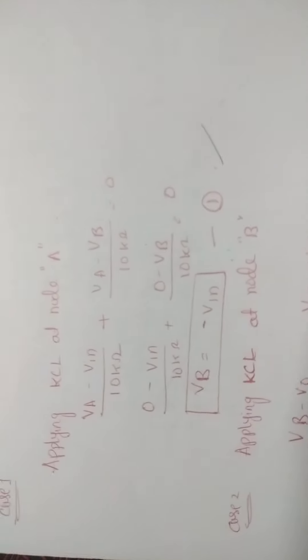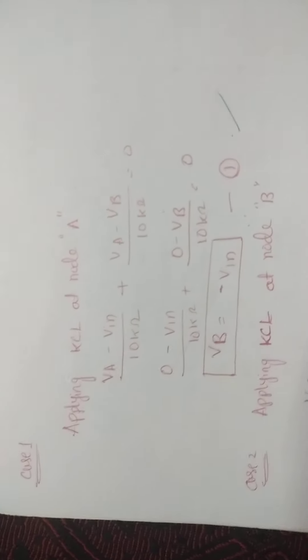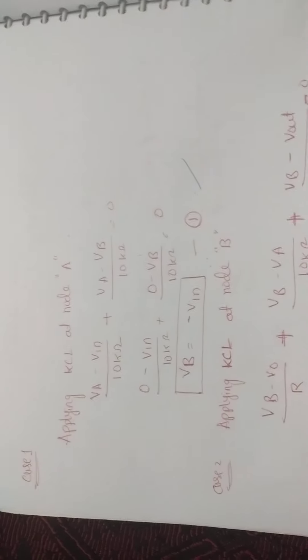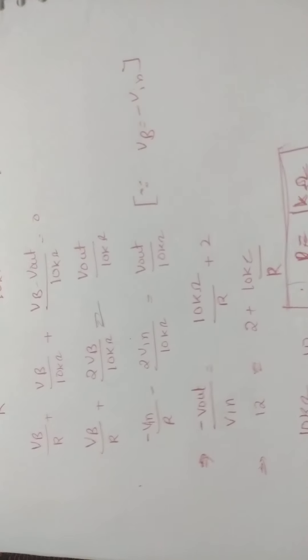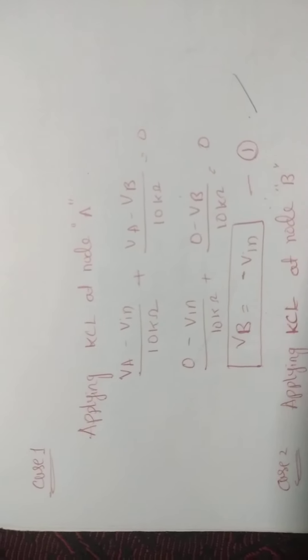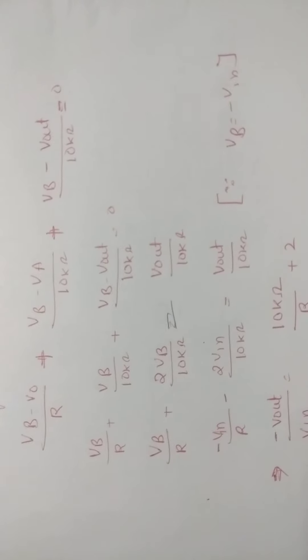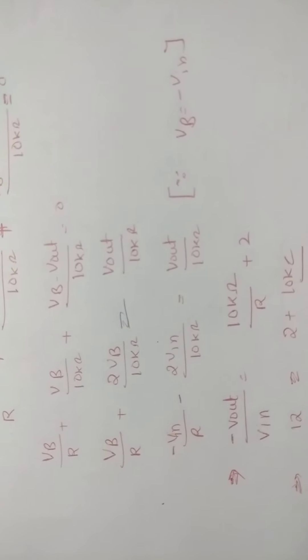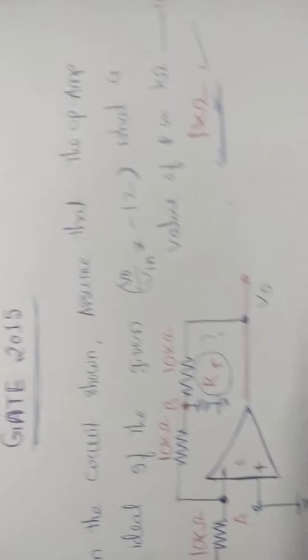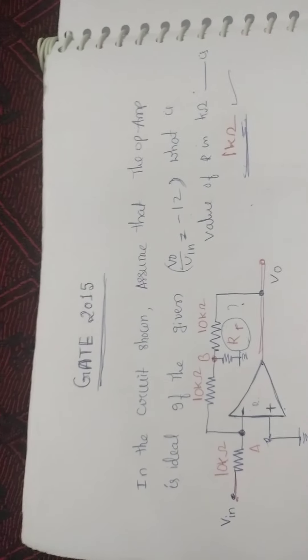This is the way you have to solve the problem. You can also solve it using star and delta network, but directly applying KCL at node A and node B gives the R value easily. The node A equation — Vb = Vin — can be substituted into the node B equation to get R equal to 1 kΩ. The right answer for this question is 1 kΩ. Thank you.